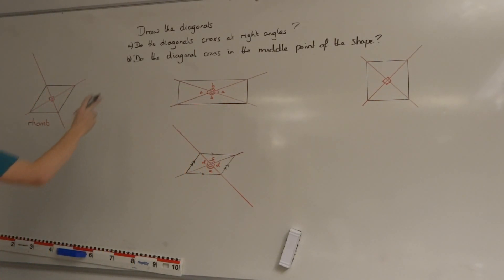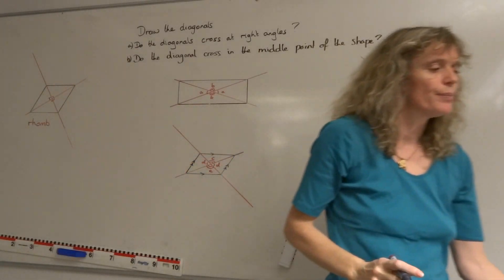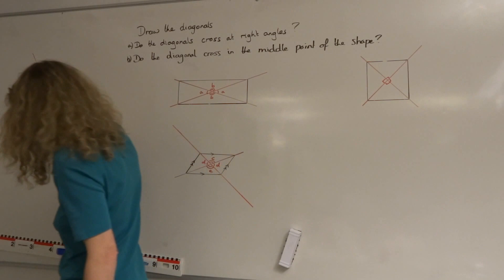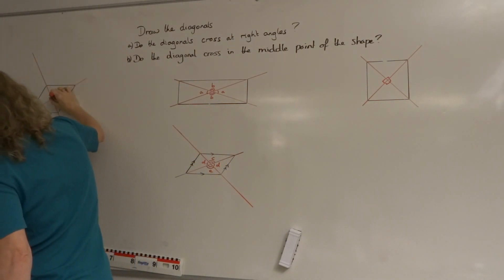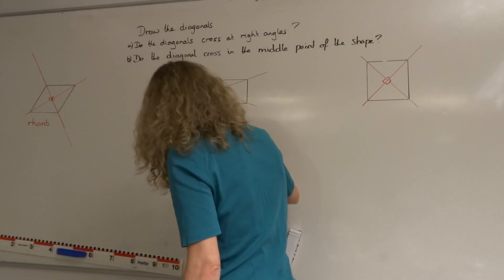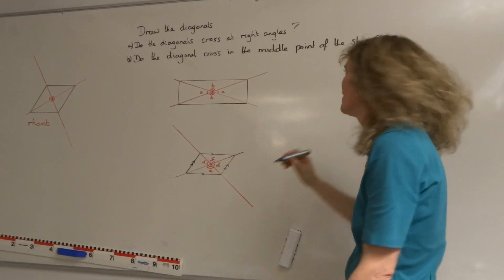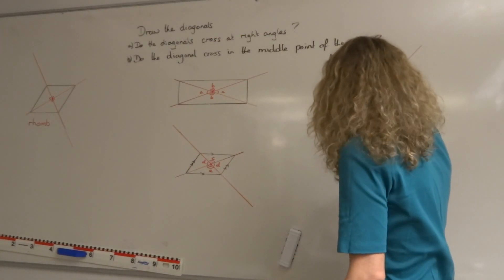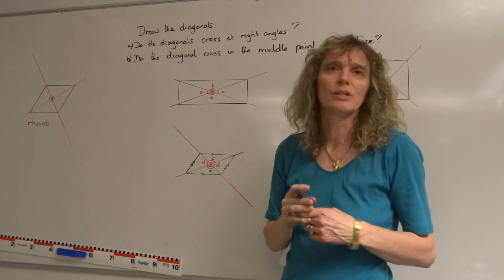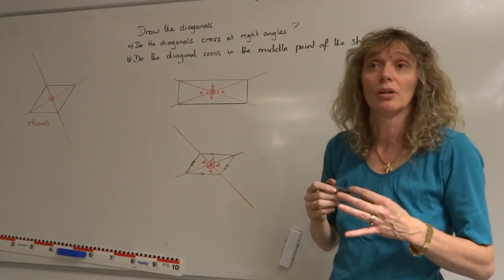Do the diagonals cross at the middle point of the shape? We can see that the diagonals do cross at the middle point of each of the shapes. Even though the shapes are not all symmetrical, the diagonals still cross at the midpoint.